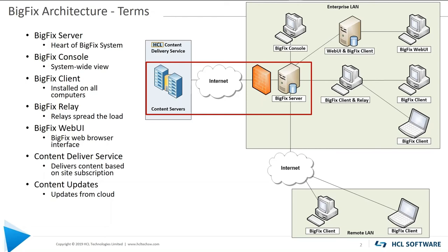Content updates: the BigFix server is the primary server that goes and gets requested content. For example, if you're applying a Microsoft patch and the BigFix client doesn't have that content — and the relay doesn't have it either — the relay will ask the BigFix server. If nobody in the environment has asked for that content yet, the BigFix server goes to the vendor — in this case, Microsoft — downloads the content, calculates the SHA-1, the SHA-2, and the file size, then makes it available for the relays and clients, which perform that same verification.